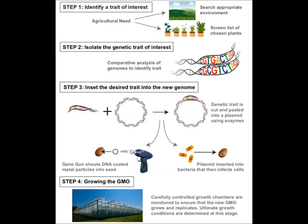This is done in a few different methods. The two most popular methods are the use of a gene gun that shoots the DNA into the seed of the plant, or by making a bacterial cell take up the DNA as a plasmid and having it infect the seed. Finally, the last step is growing the GMO.